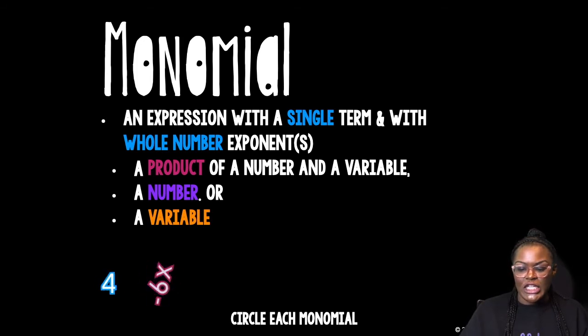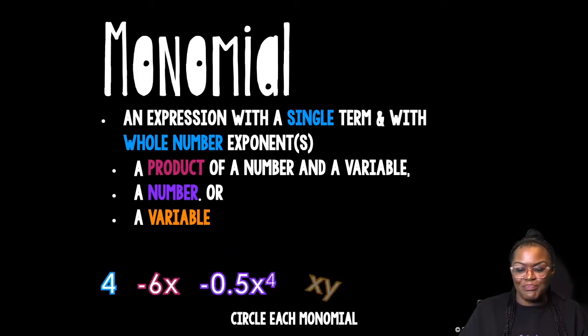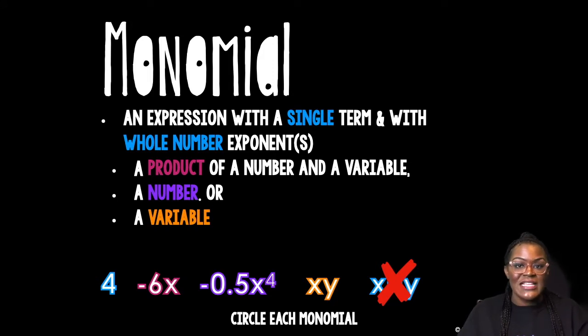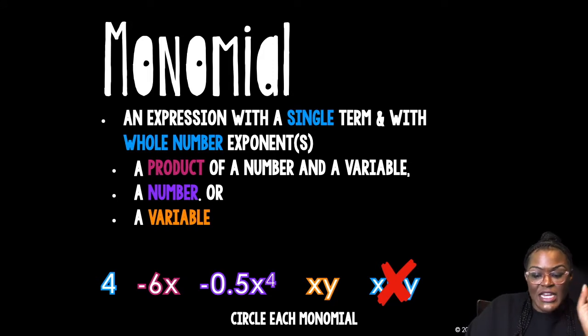So circle each monomial. Four is a monomial. Why? Because it is a number, the purple bullet point.